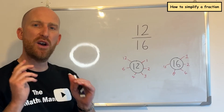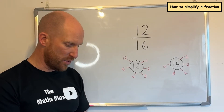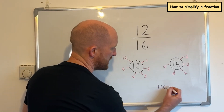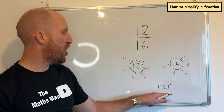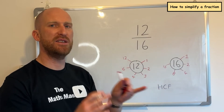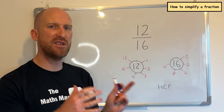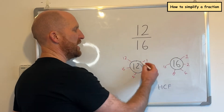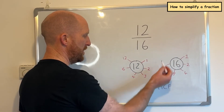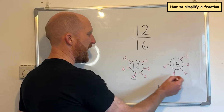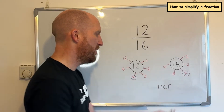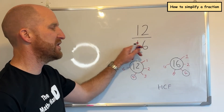Once you are confident that you have found all of the factors, what you're then going to look for is something called the HCF — the highest common factor. What that means is the highest number that is in both of your lists. So we have one and one, two and two, four and four, and four is the highest number that is in both of these lists. So four is the highest common factor between 12 and 16.